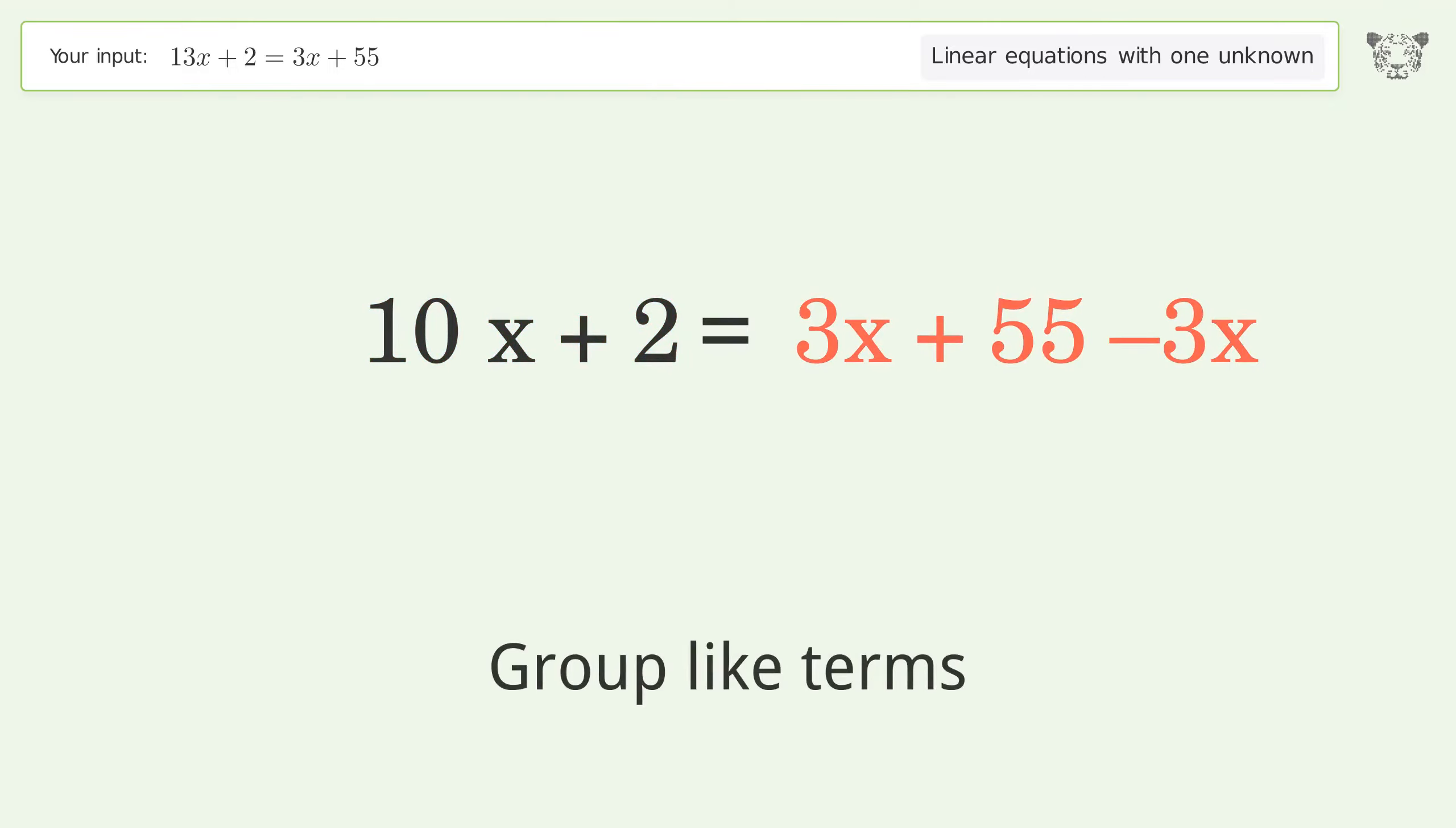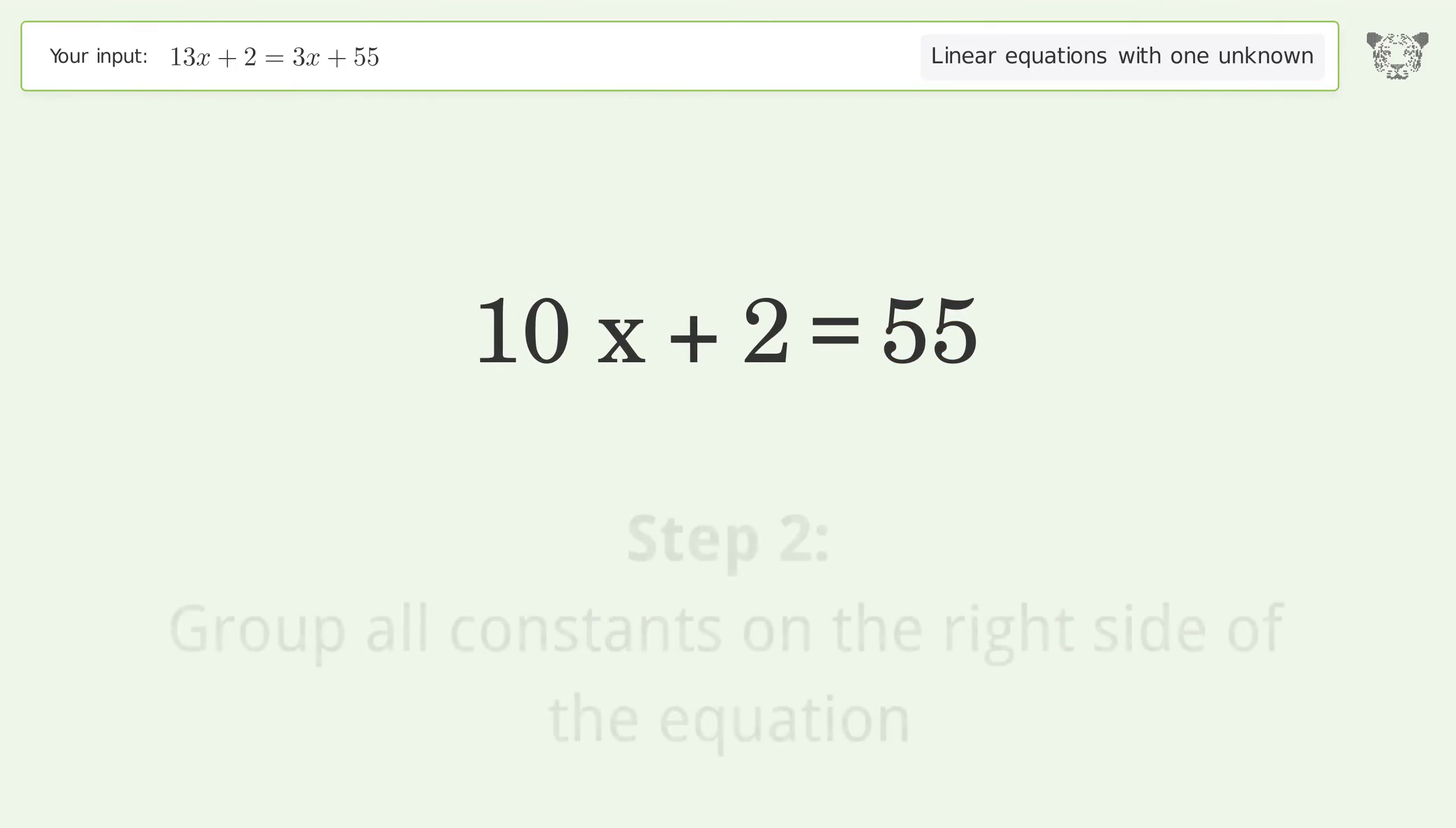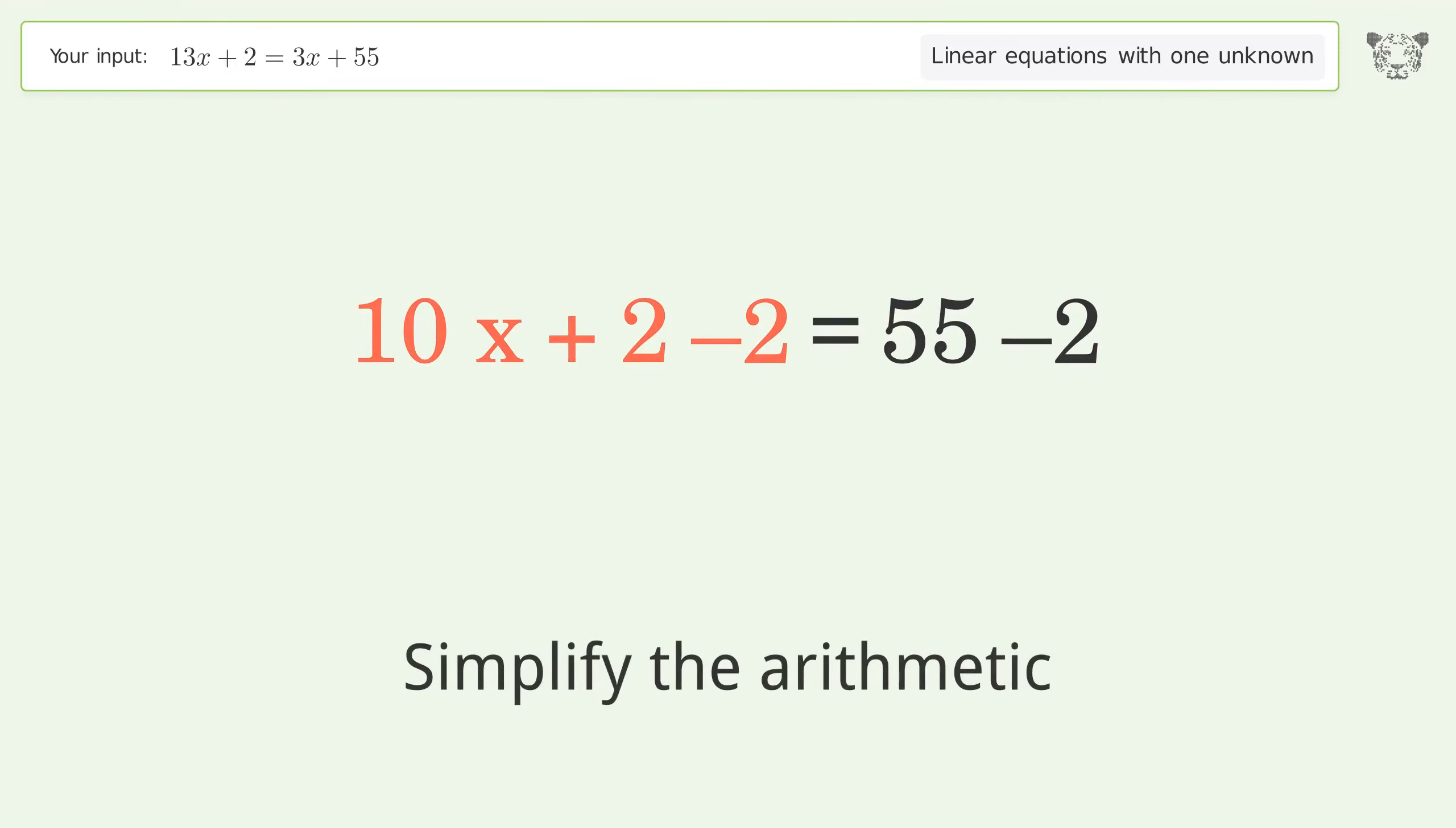Group like terms. Simplify the arithmetic. Now group all constants on the right side of the equation. Subtract 2 from both sides. Simplify the arithmetic.